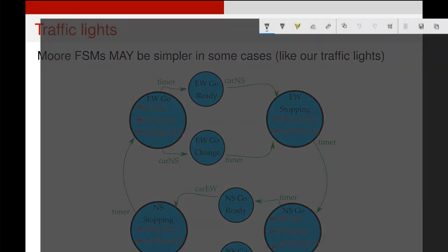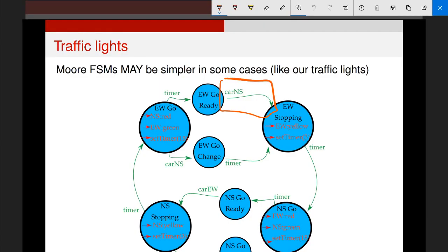So for example, if we look at these two transitions here and here, they must now have exactly the same actions because the actions are attached to the state, whereas before we could have had different actions on this transition and that transition, but we chose not to.